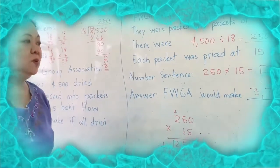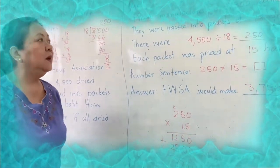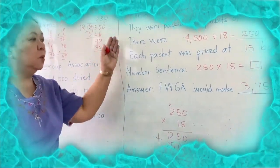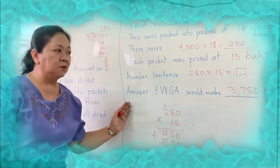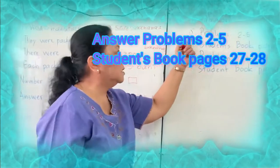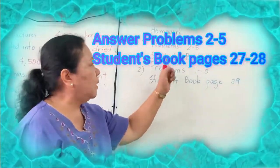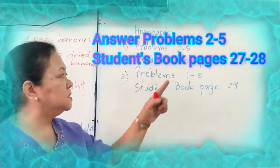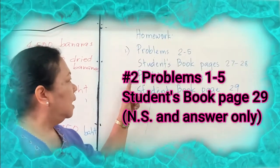That is how you will analyze a problem and how to show the working to arrive at the correct answer. Now for your homework, please answer problems 2 to 5 on student's book pages 27 and 28.